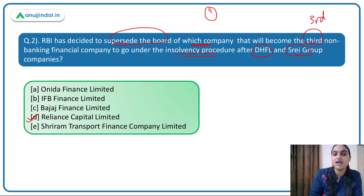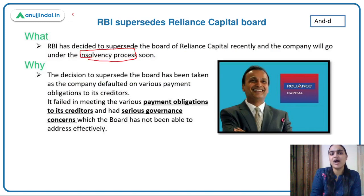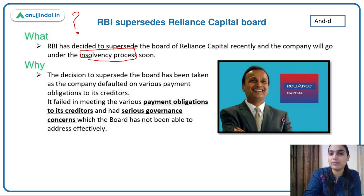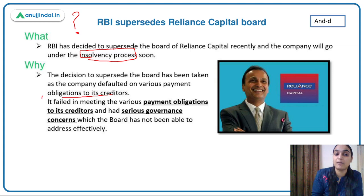The answer is Option D — Reliance Capital Limited. RBI has superseded Reliance Capital Limited, and this company is going to go through the insolvency process. The reason RBI did this is that the company defaulted on payment obligations to its creditors.